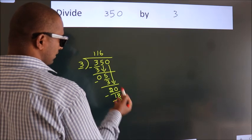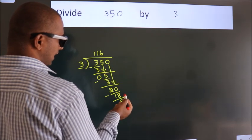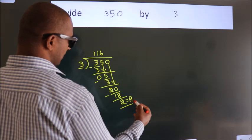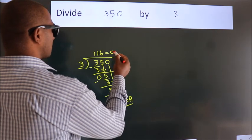After this, no more numbers to bring it down, so we stop here. This is our remainder, this is our quotient.